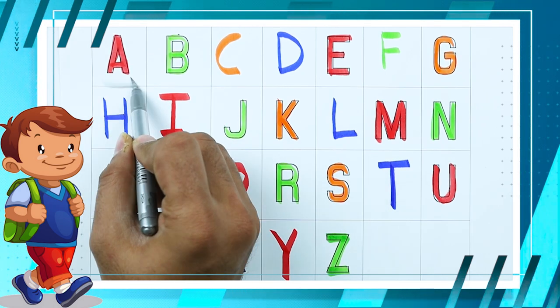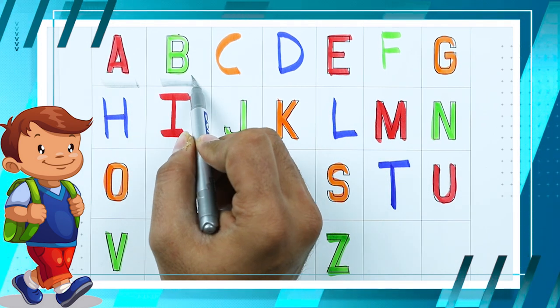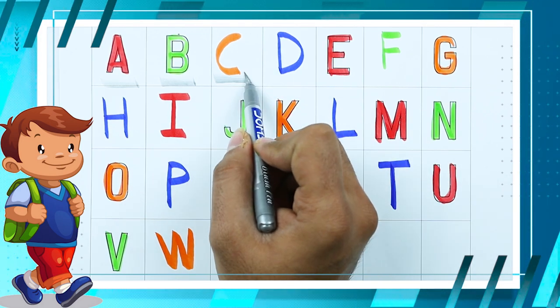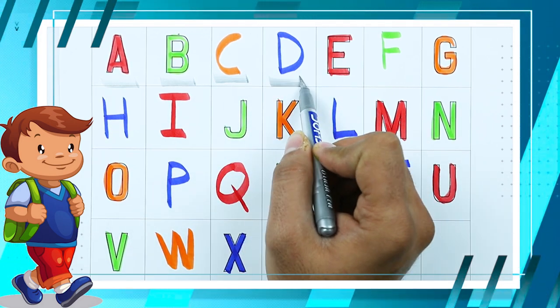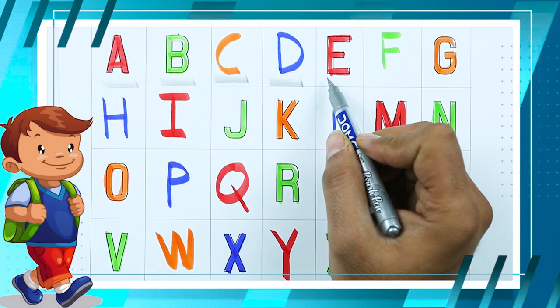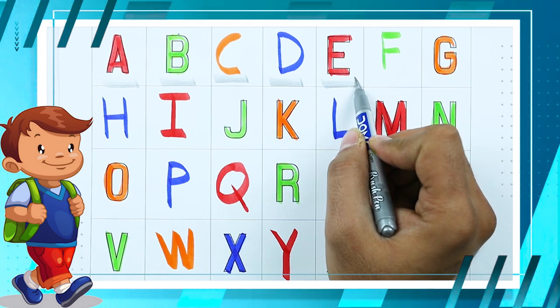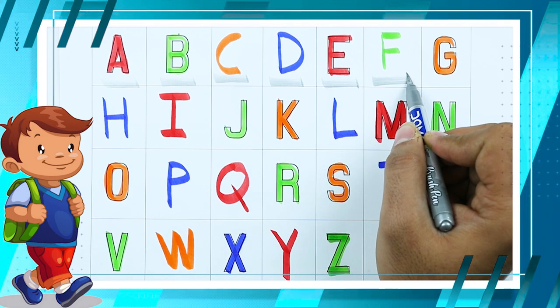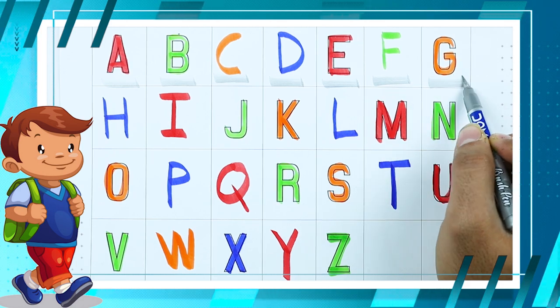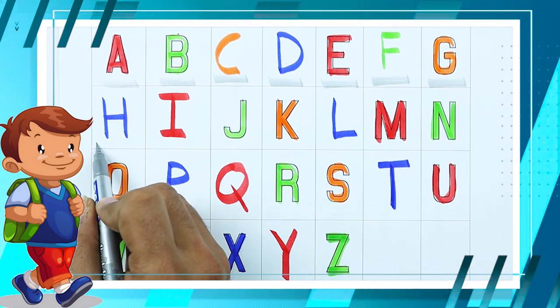A. A for apple. B. B for ball. C. C for cat. D. D for dog. E. E for elephant. F. F for fish. G. G for goat.